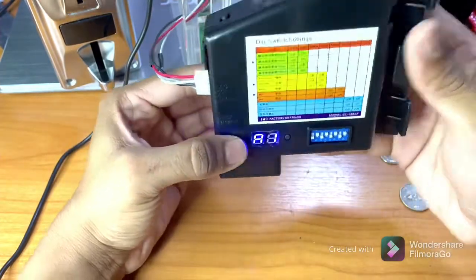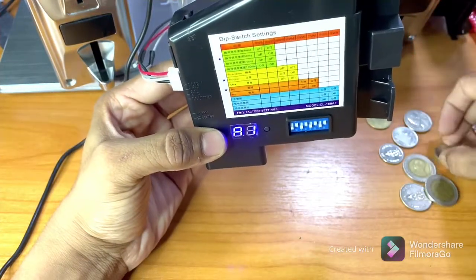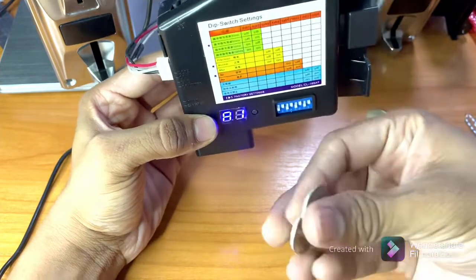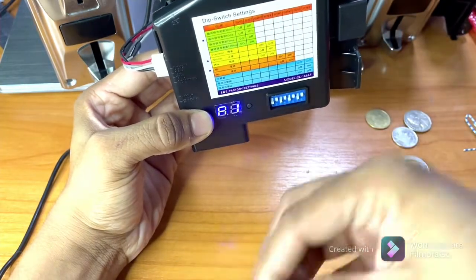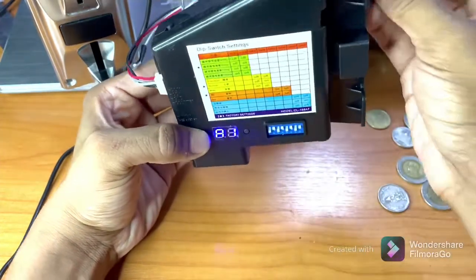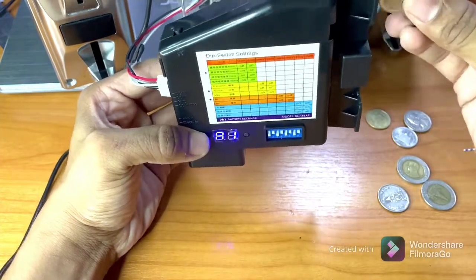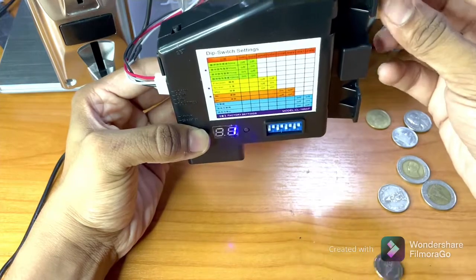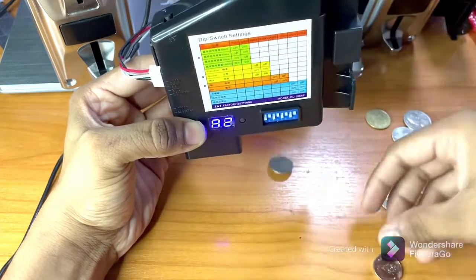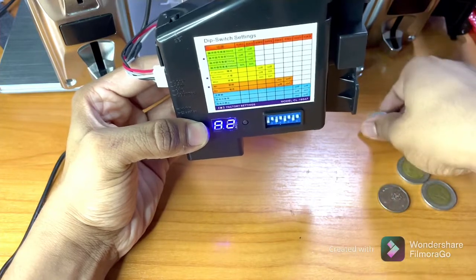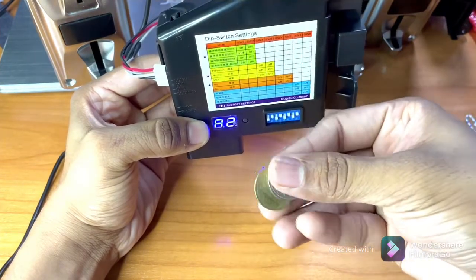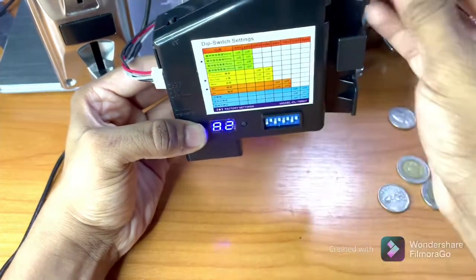As you can see, I have two different coins of one bath, new and old. Just insert them. Now next is A2, it means two bath, two coins, sample coin.